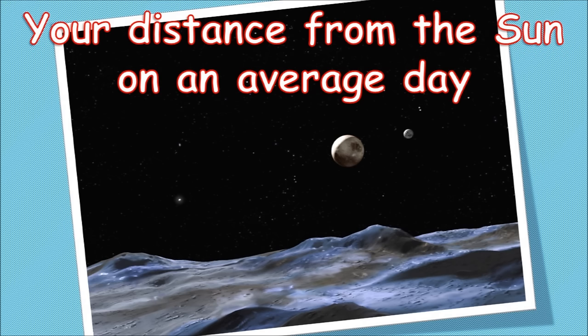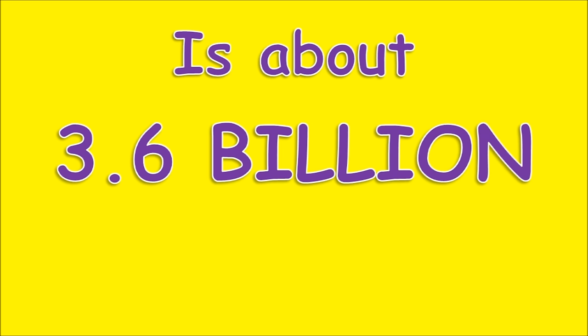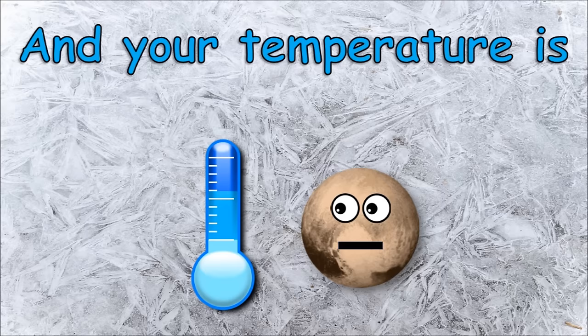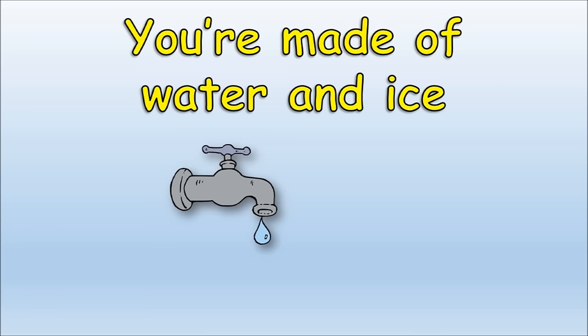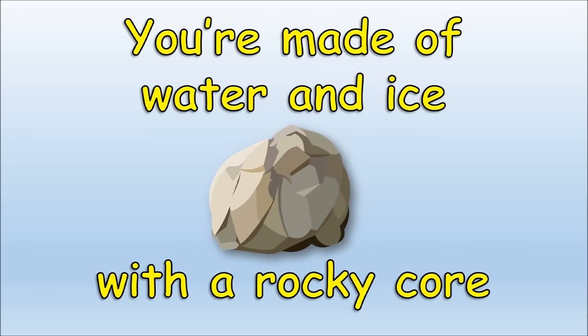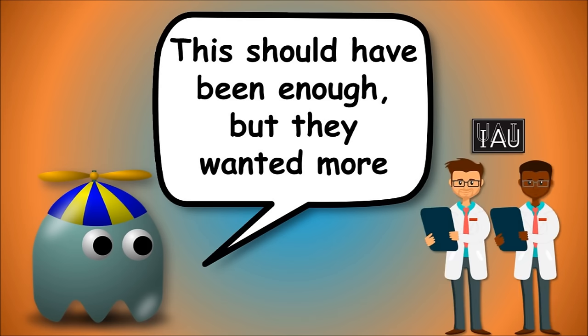Your distance from the sun on an average day is about 3.6 billion miles away, and your temperature is negative 369 degrees. You're made of water and ice with a rocky core. This should have been enough, but they wanted more.